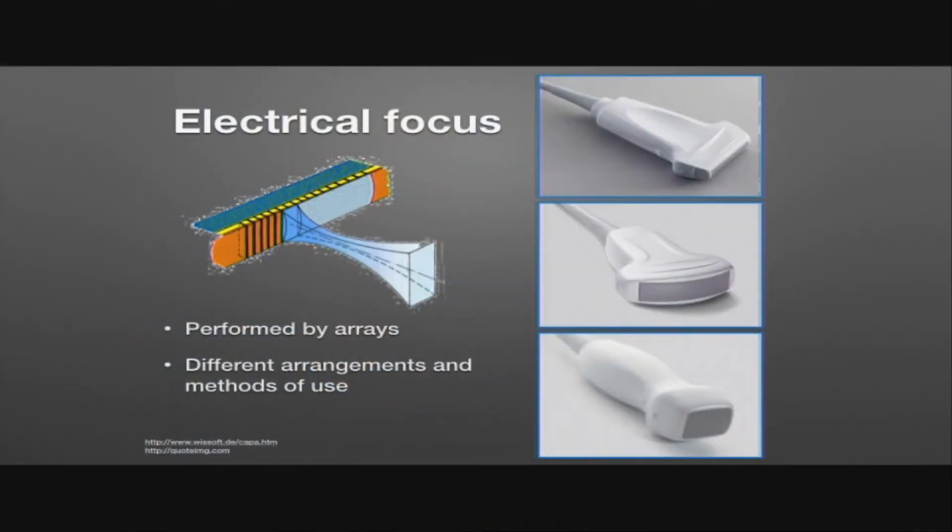In a linear array or a curved array probe, which you can see in the top of those two probes seen here, these cuts are approximately 0.3 of a millimeter apart. And that gives you about 256 elements, which is a standard number across most linear or curvilinear probes. In the phased array probes, you get approximately 64 or 128 or even 256 in some of the newer probes. And this is because you've got a smaller footprint, and all of the phased array elements are firing at the same time.